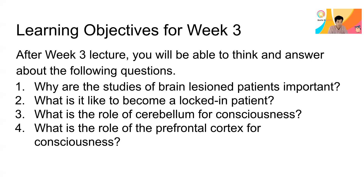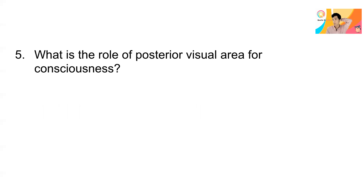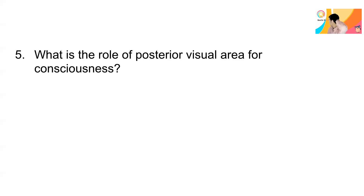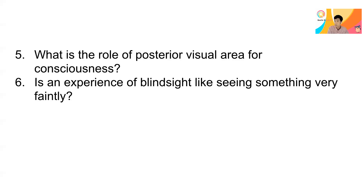Fourth, what is the role of the prefrontal cortex for consciousness? And fifth, what is the role of the posterior visual areas for consciousness? The prefrontal cortex is at the front of the brain — many people think it is the executive, highly cognitive seat of personality and working memory. However, the posterior visual areas at the back of the brain also play a role: if you lose the back of the brain, you lose phenomenal vision, resulting in an interesting condition called blindsight — an oxymoron, blind but still seeing.